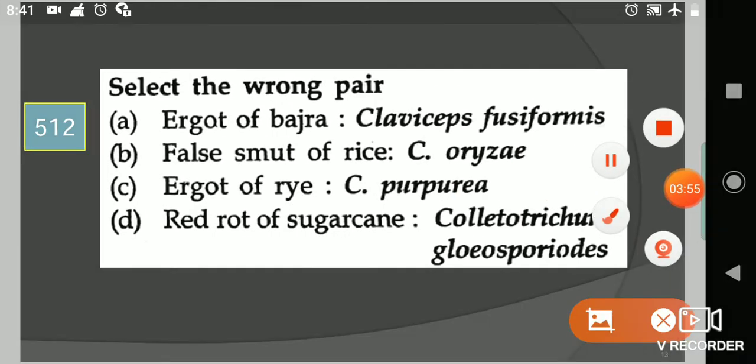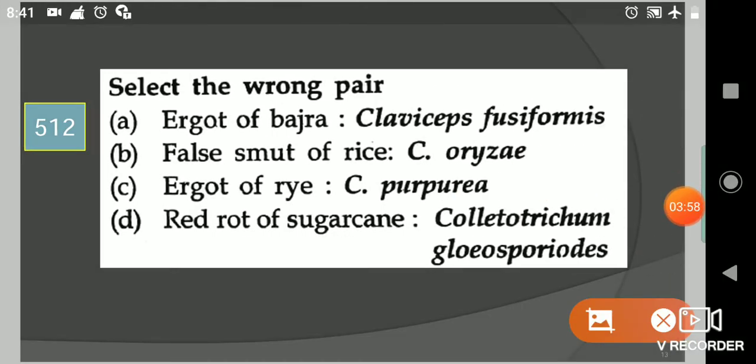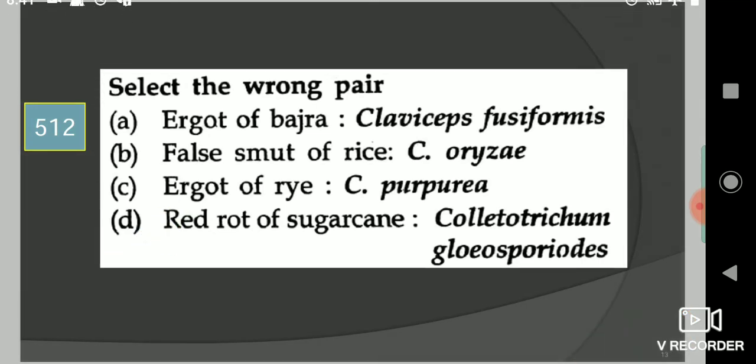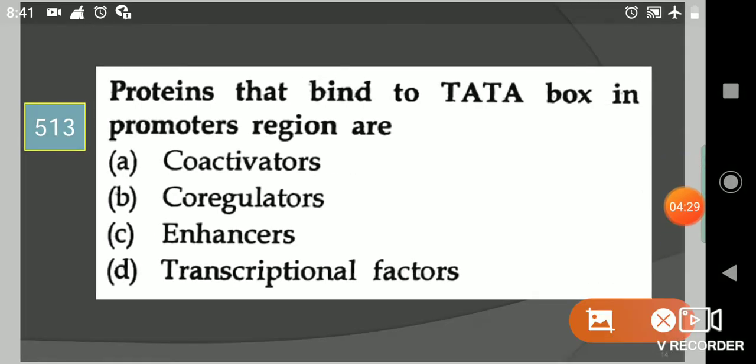Next question: Select the wrong pair. Your options are ergot of bajra rice related to Claviceps fusiformis, false smut of rice related to Claviceps oryzae, ergot of bajra rice related to Claviceps purpurea, red rot of sugarcane related to Colletotrichum gloeosporioides. Your answer is option D. This is not the correct pair, this is the wrong pair. The rest ABC are correct ones.